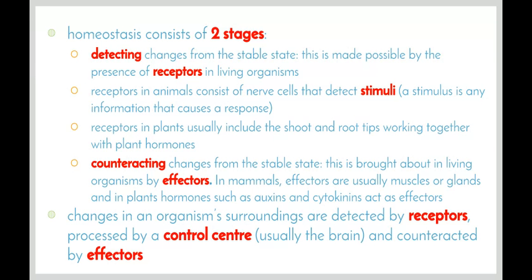Homeostasis consists of two stages. Firstly, we need to be able to detect changes from the stable state. This is made possible by the presence of receptors in living organisms. Receptors in animals consist of nerve cells that detect stimuli, and as we remember from junior science, a stimulus is any information that brings about a response. For humans, stimuli can include the amount of light, hearing a sound, feeling pressure on your skin, or heat, and they're detected by specific receptors.